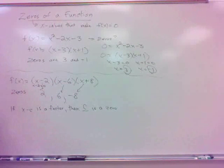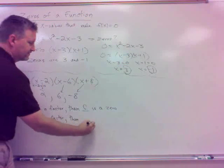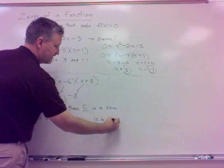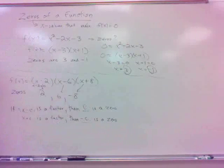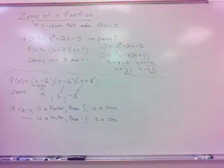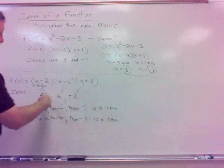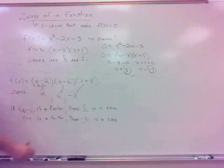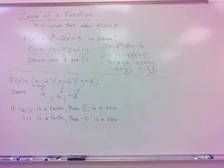That covers it, but what if it's x plus c? Then the zero is negative c. The zero is the opposite sign of the number in the factor. Looking back at our first example, positive 3 and negative 1 are opposite sign from what was in the factors. It also goes the other way — if you have the zeros, you can find the factors.